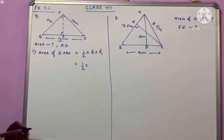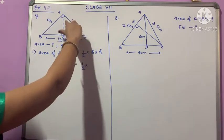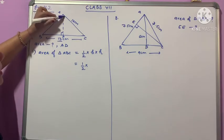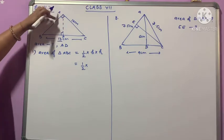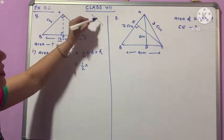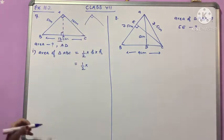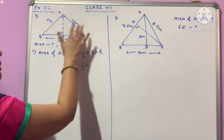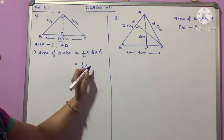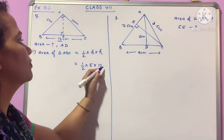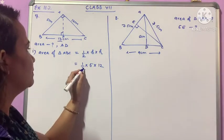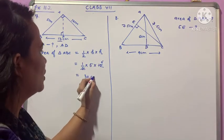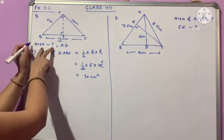Area of triangle ABC equals half times 5 times 12, which equals half times 60, which equals 30 centimeter square. This is the first part finished.